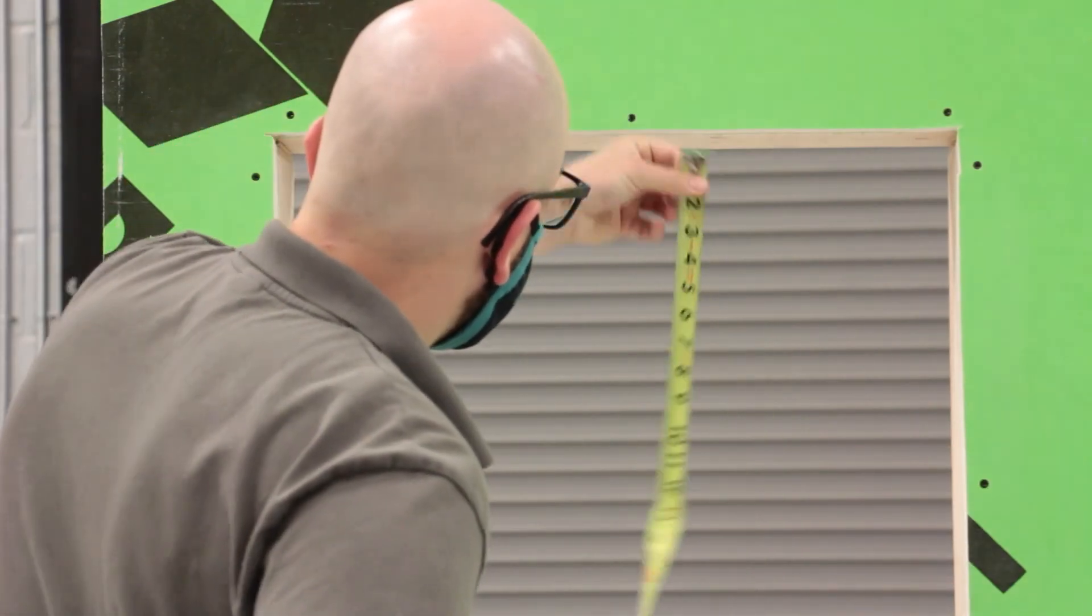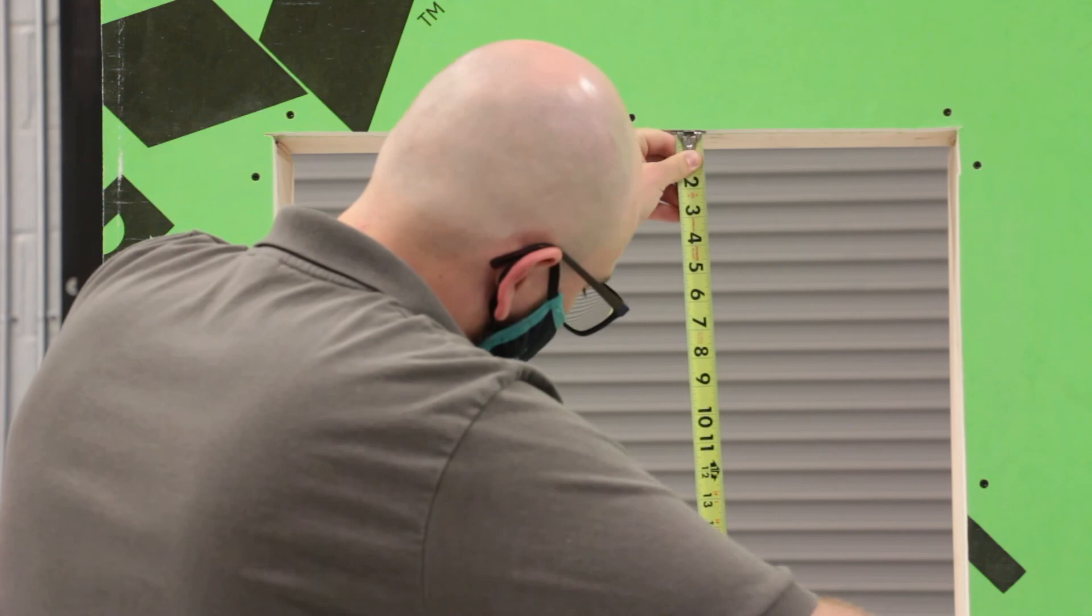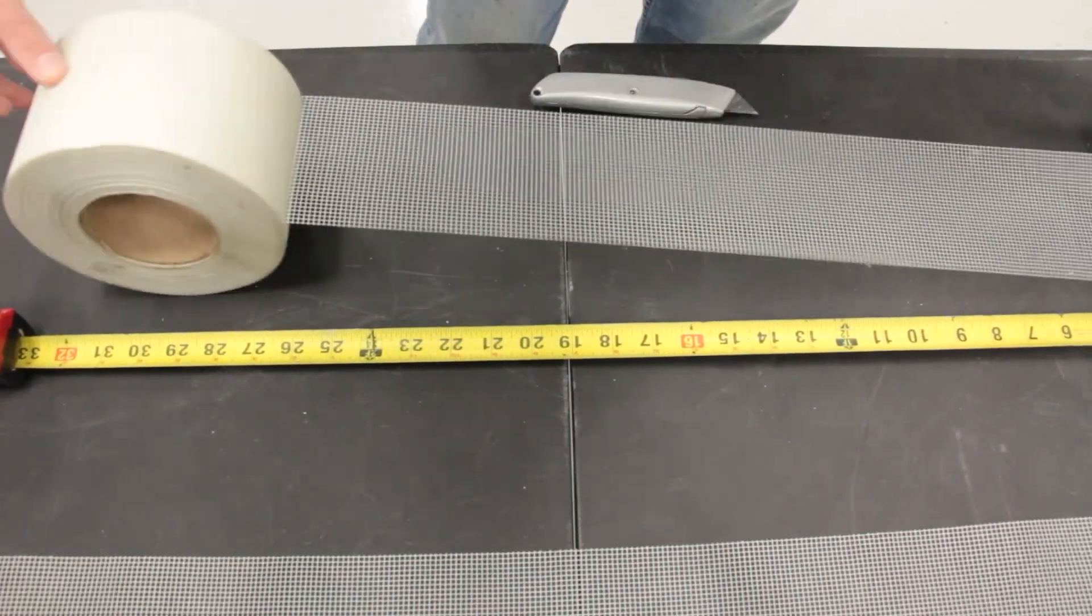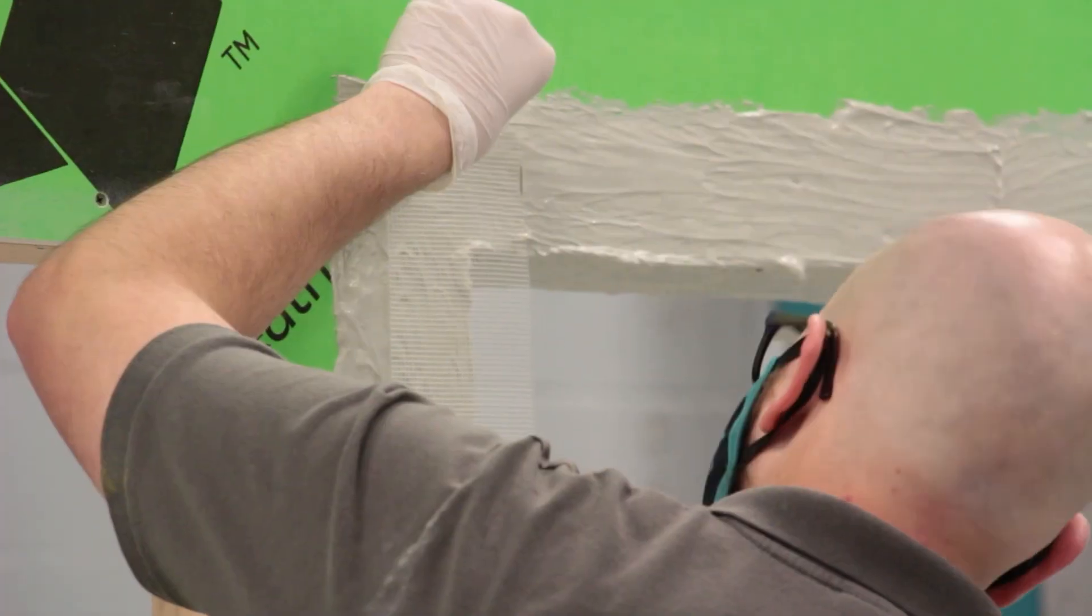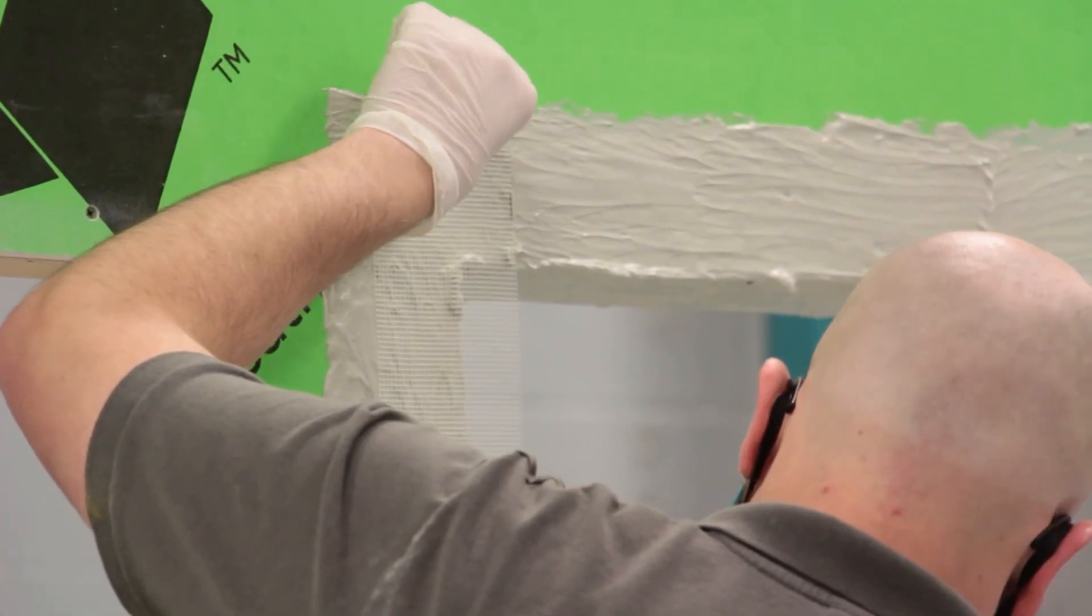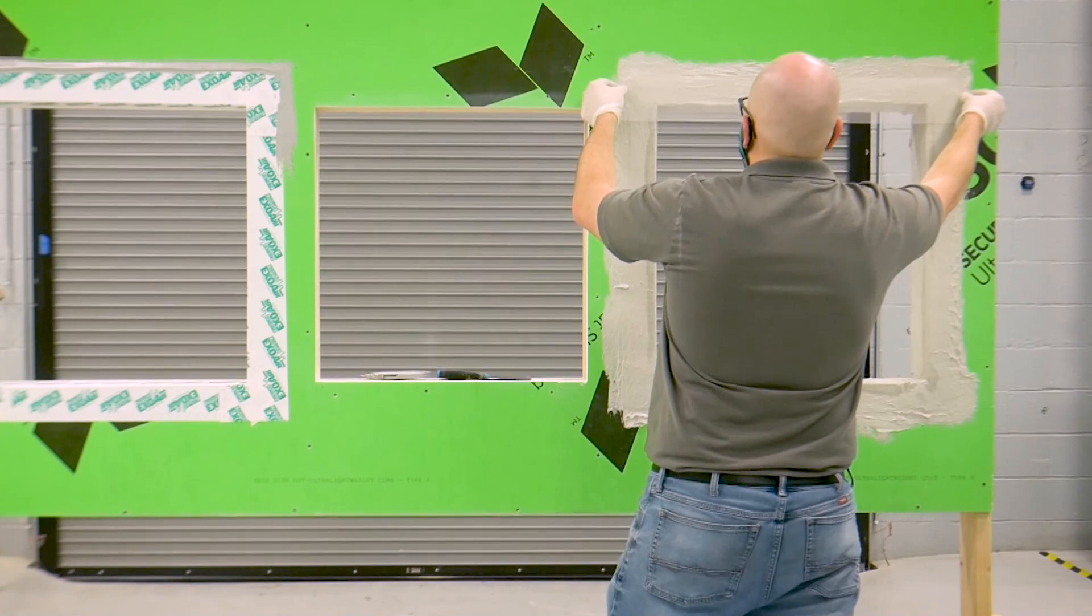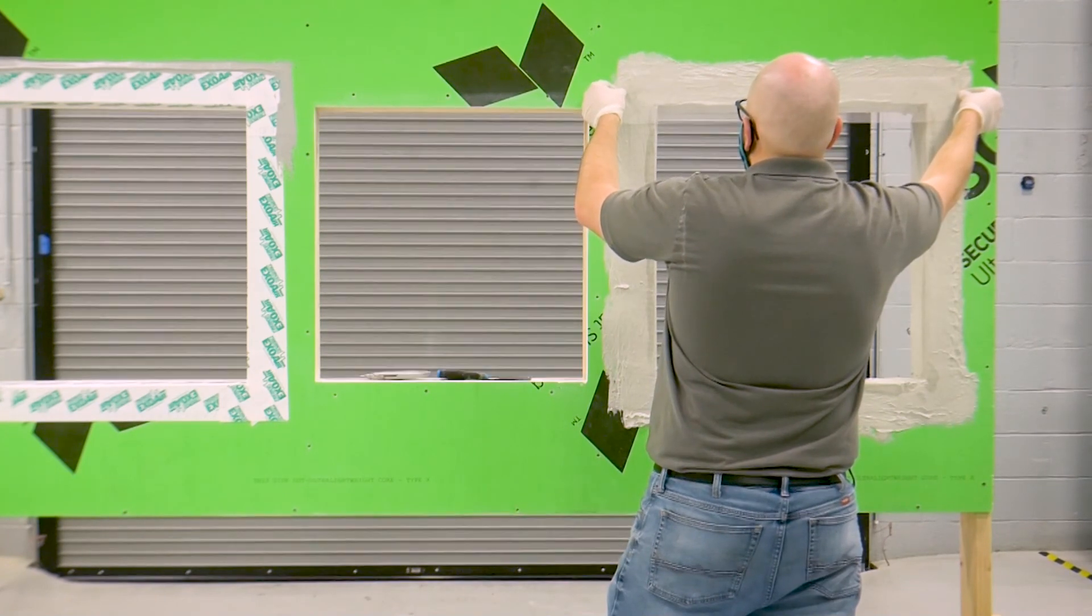Next, measure your rough opening and cut the Tremco Mesh to the proper length, ensuring that it is 6 inches wider than your rough opening to extend 3 inches on each side. Next, embed the Tremco Mesh into ExoAir 230 around the entire rough opening.